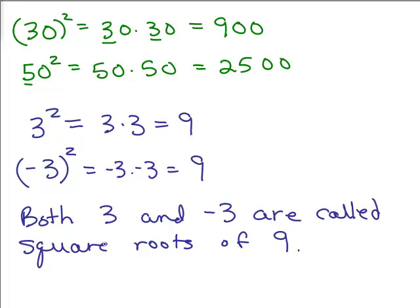because when I square them, I got 9. So a number is called a square root of a number if when you square it, you get that number. So both 3 and negative 3 are square roots of 9.